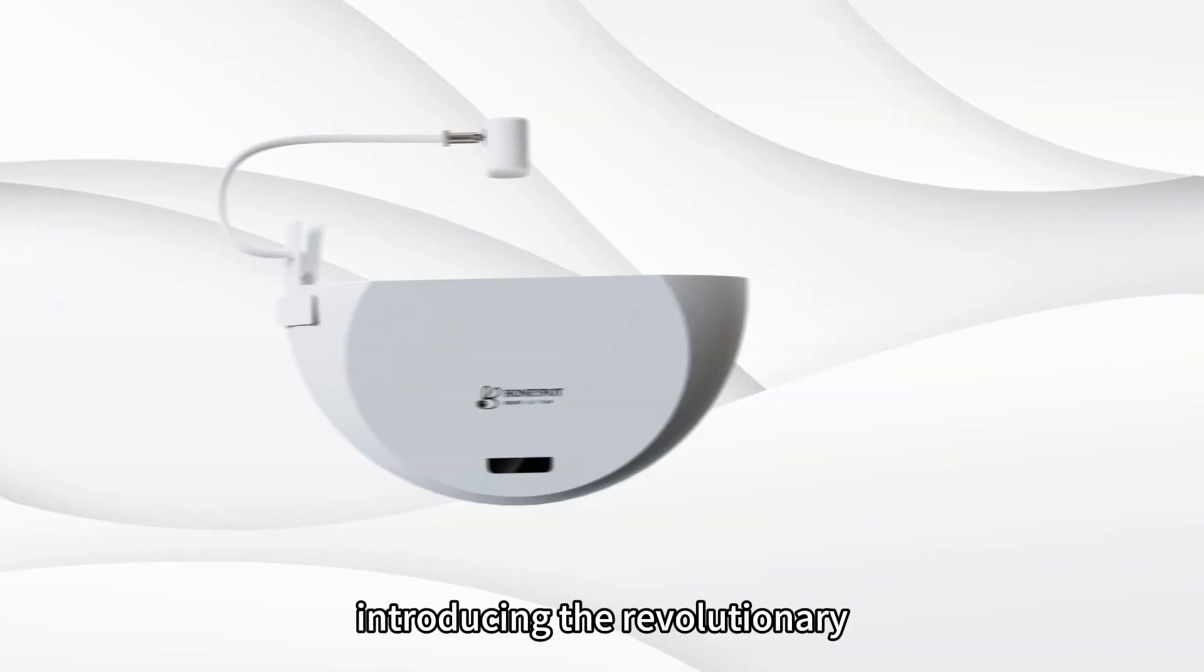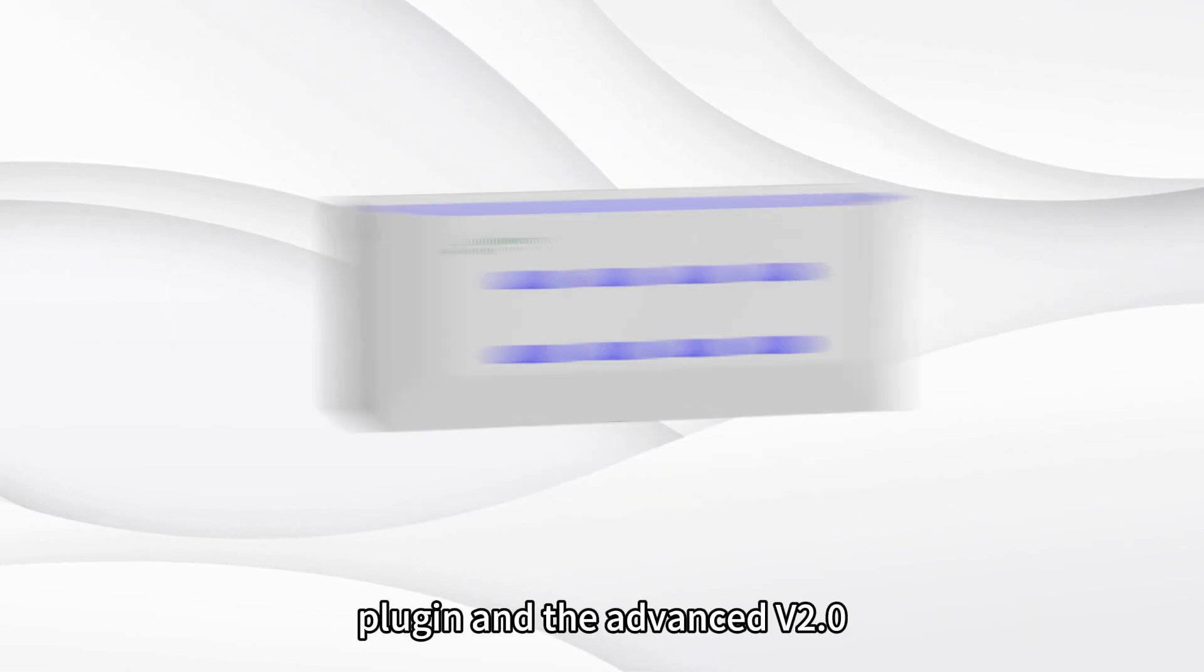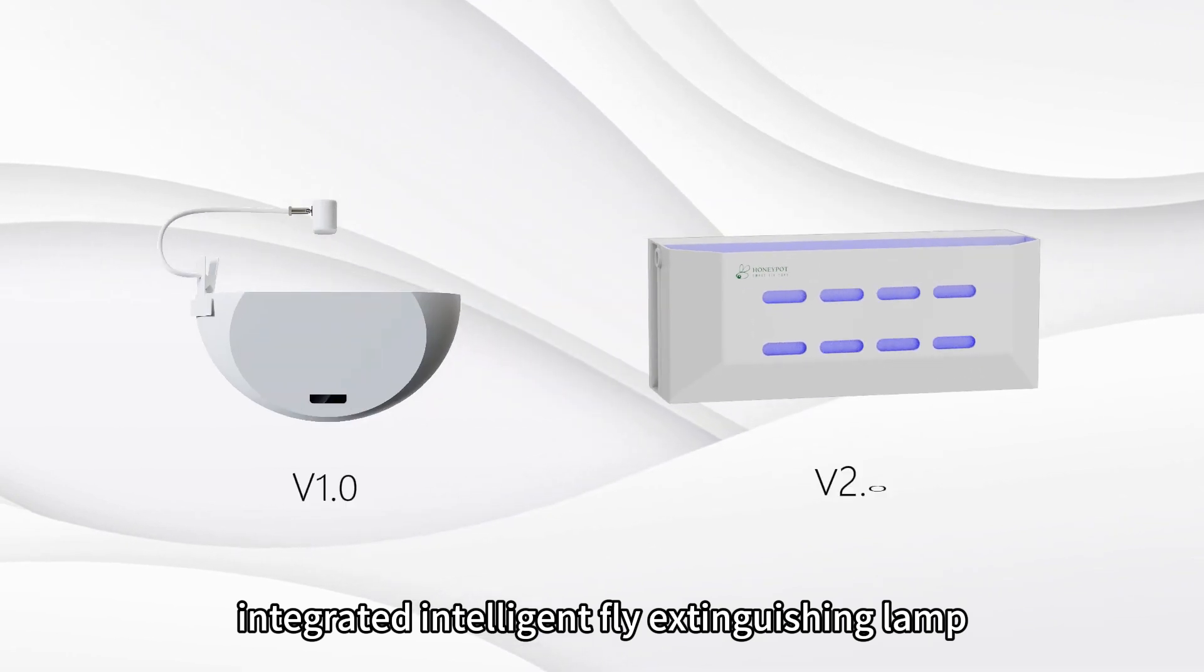Introducing the revolutionary Honeypot V1.0 Embedded Fly Extinguishing Rope Light Plug-in and the advanced V2.0 Integrated Intelligent Fly Extinguishing Lamp.